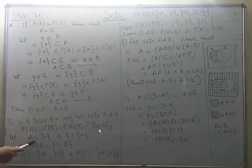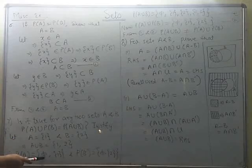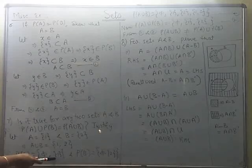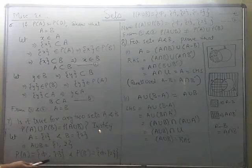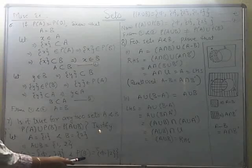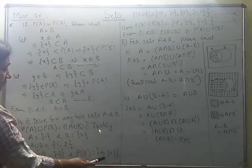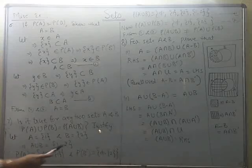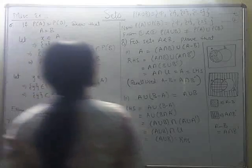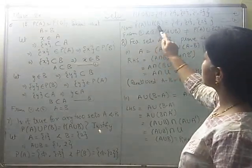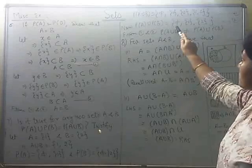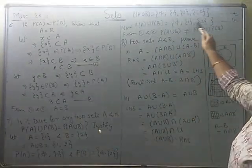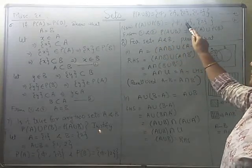Power set of A will contain the subsets of A. The subsets of A are: the null set and the set {1} itself. So power set of A = {∅, {1}}. Similarly, power set of B will be a new set containing the subsets of B: {∅, {2}}. Once we know power set of A and power set of B, we can write their union. Taking union of these two sets — null set is common so we write it once — giving power set of A union power set of B = {∅, {1}, {2}}.